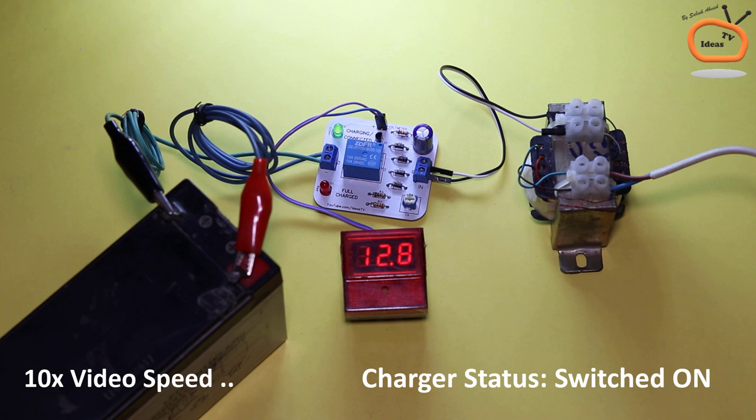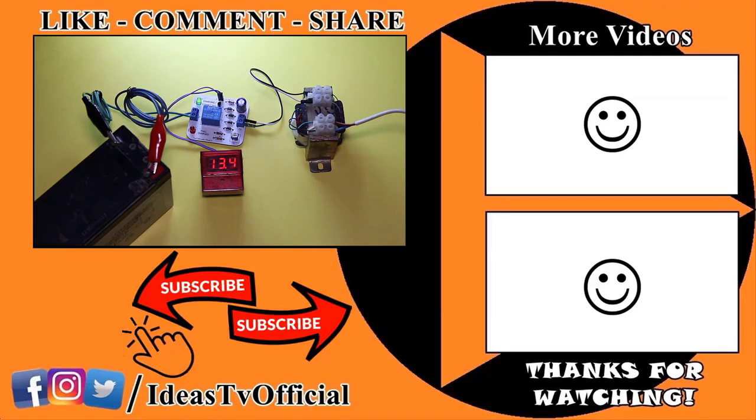And the circuit will automatically cut off the supply to the battery when the voltage reaches 14V to 14.5V as we calibrated it.